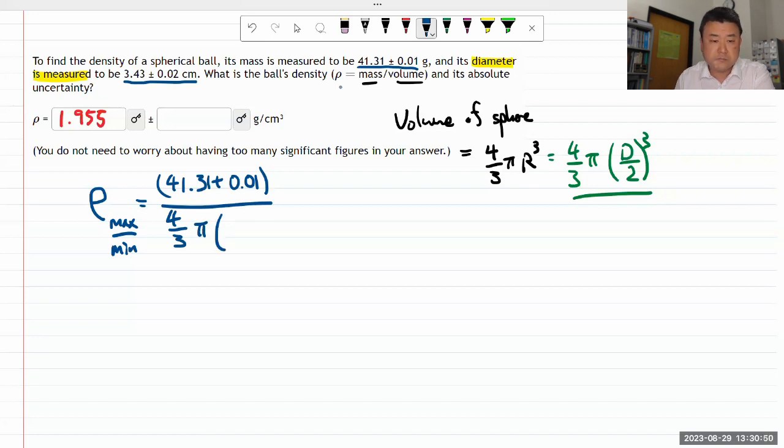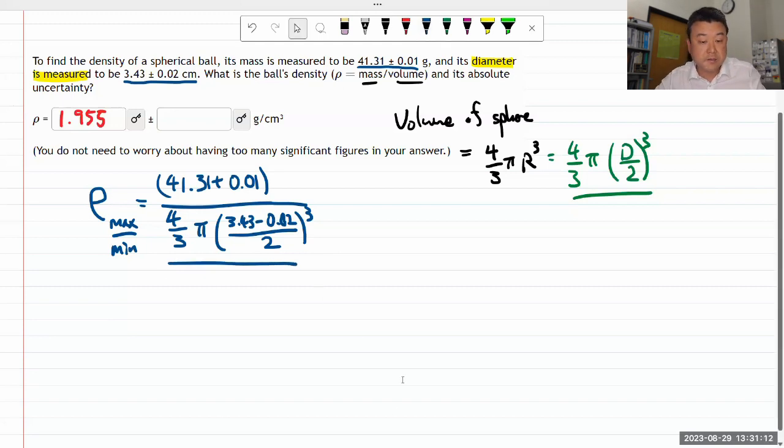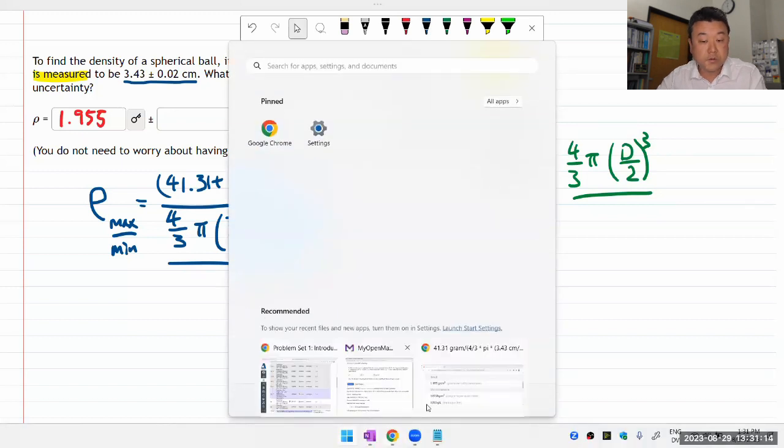If I want to maximize density, I want the denominator to be minimized, so I'm going to put in 3.43 minus 0.02 cm for the diameter, all divided by 2 cubed. This is the number I want to calculate that will give me the maximum estimated density.